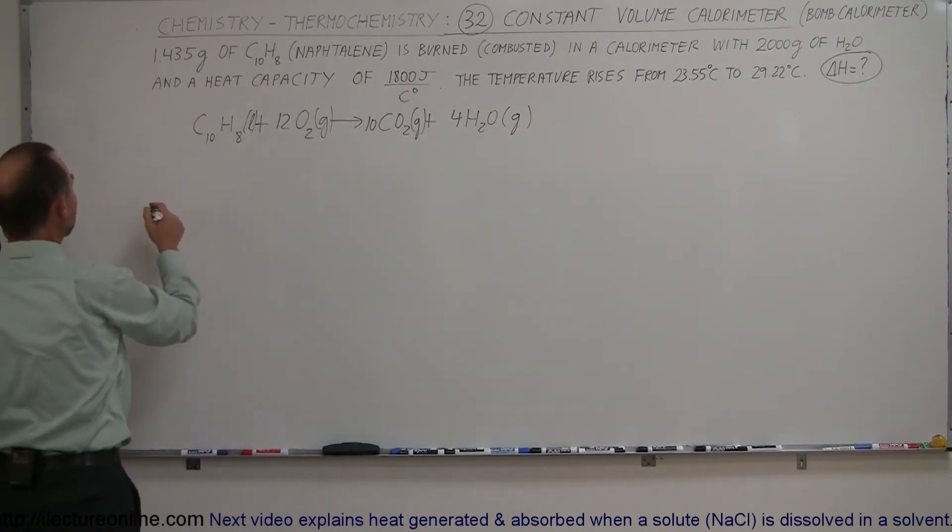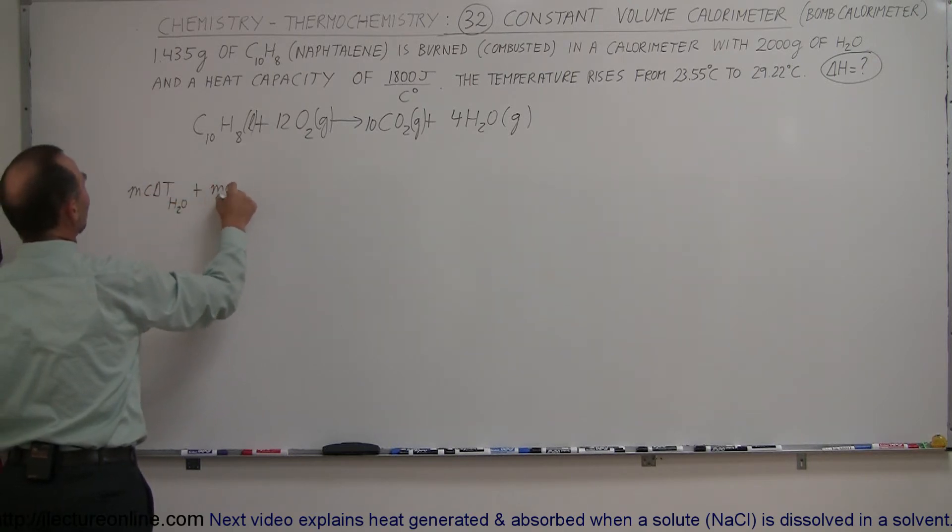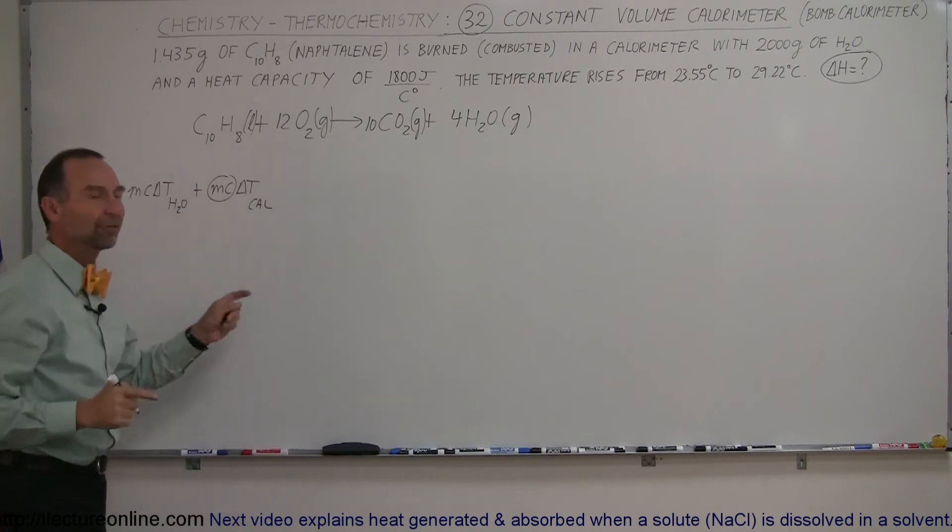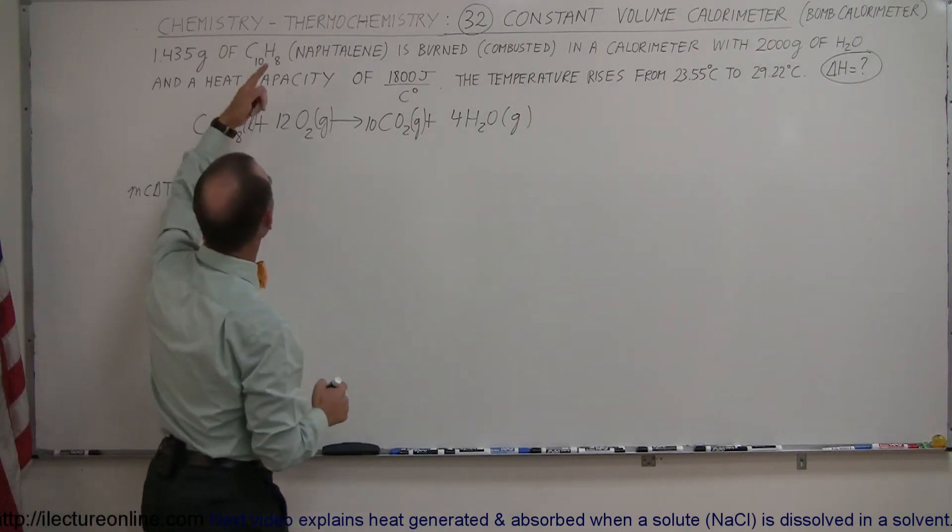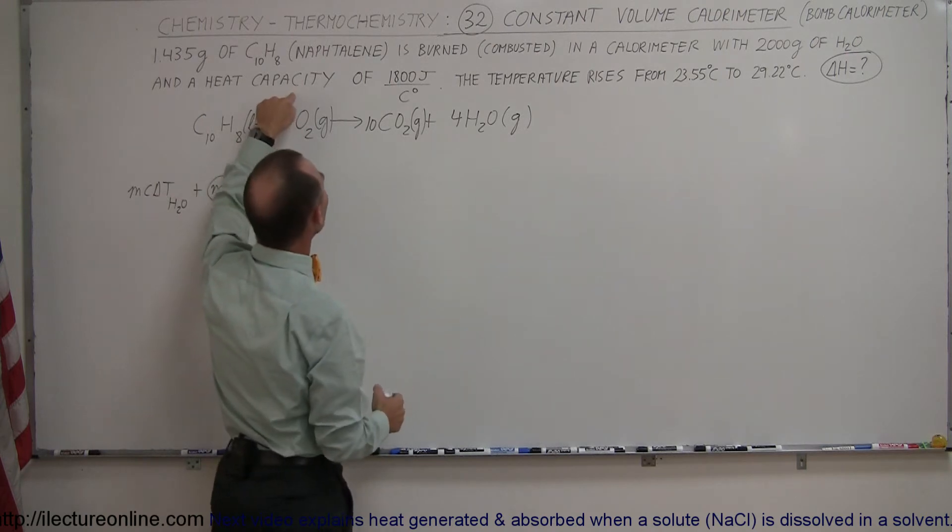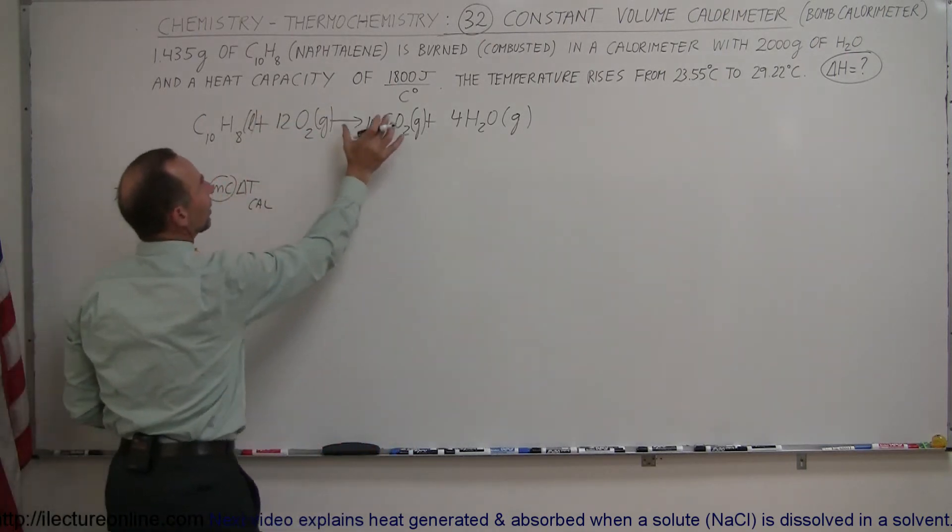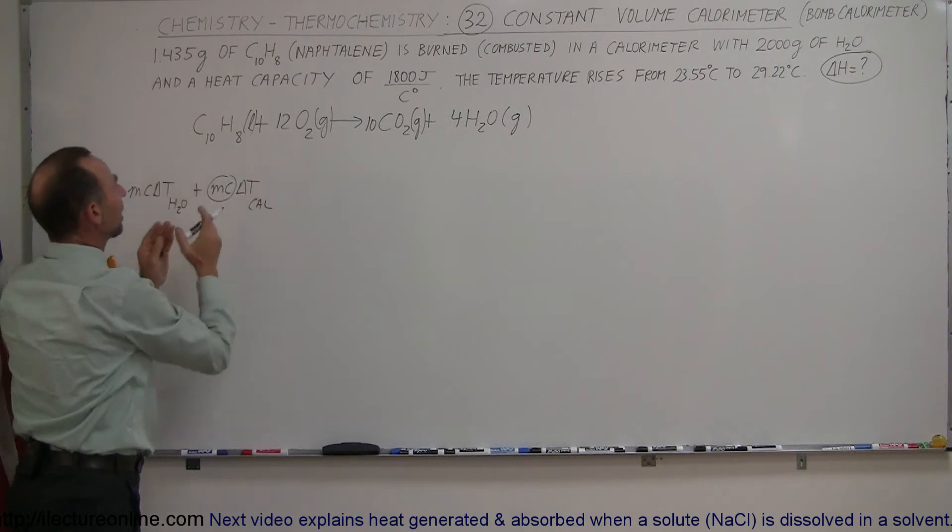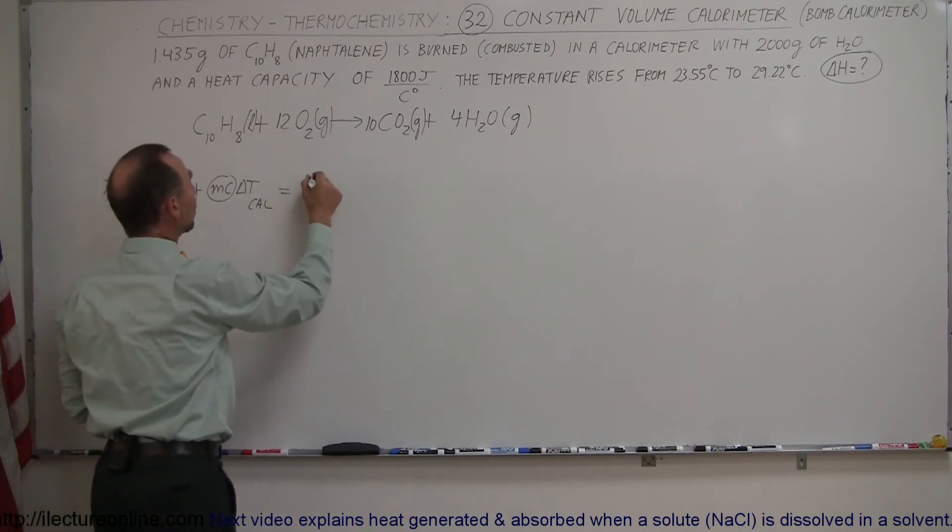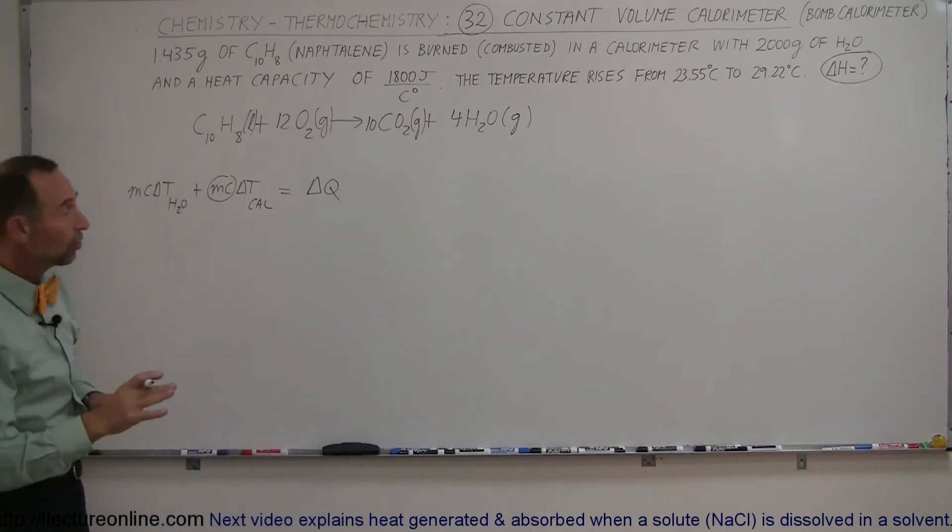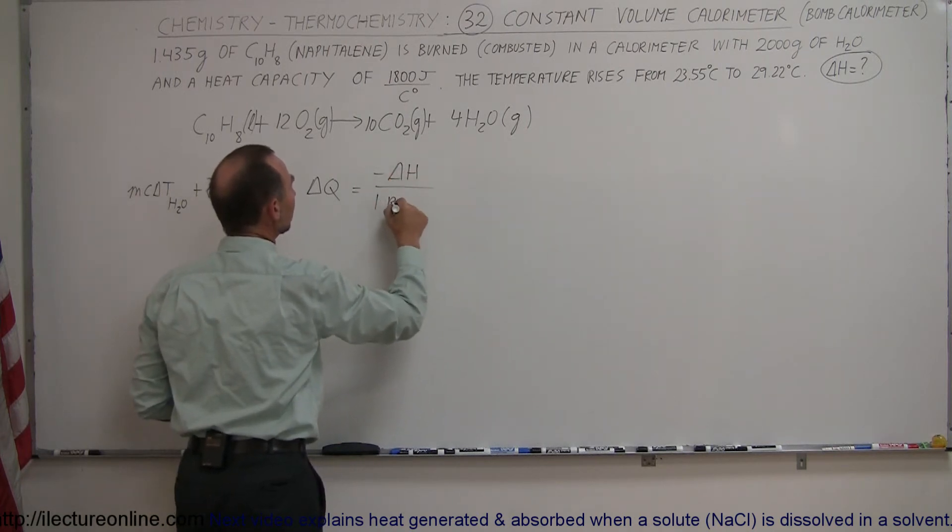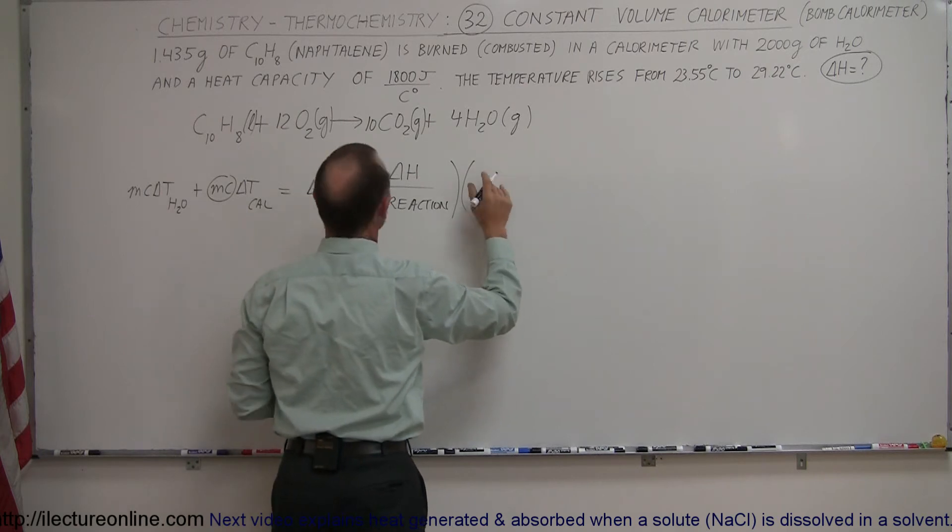Now the equation. The heat gained by the water, which is the MC delta T for the water in the calorimeter, plus the MC delta T for the calorimeter itself. Notice the MC of the MC delta T for the calorimeter is the heat capacity, which is this number right there. So heat is gained by the water in the calorimeter, heat is gained by the calorimeter itself, and those two combined should equal the heat given off by the reaction. The equation for the heat given off by the reaction is equal to the negative of the enthalpy change per the reaction.